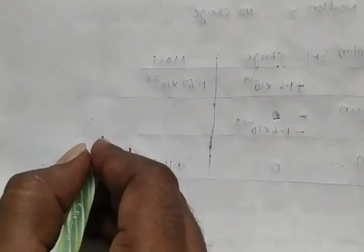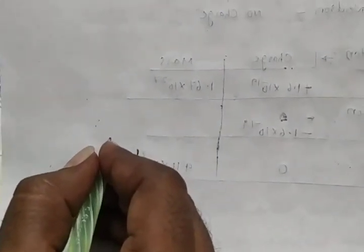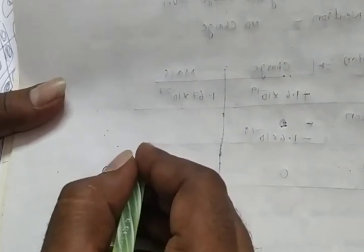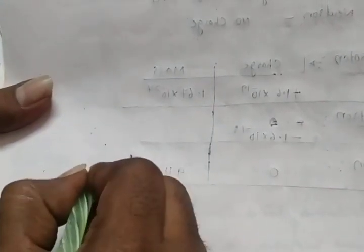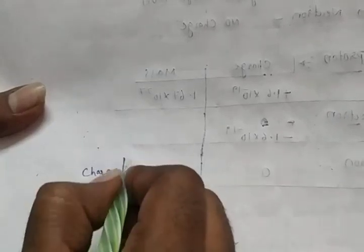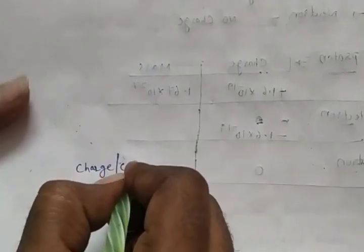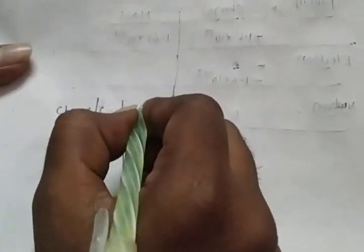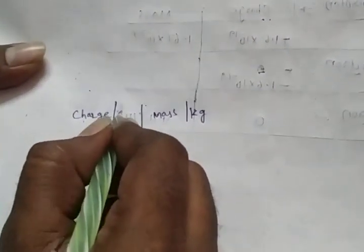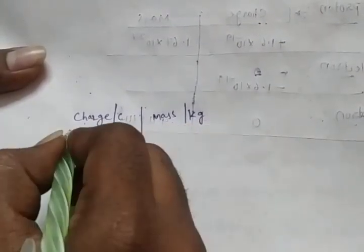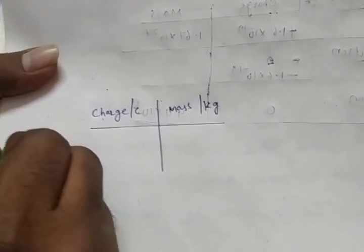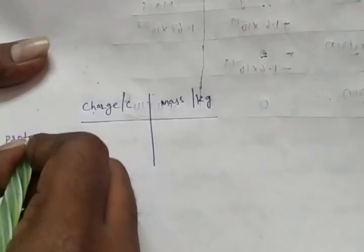Now proton, electron, and neutron — we have to discuss their charge and mass one by one. Charge is measured in Coulombs and mass is measured in kilograms.